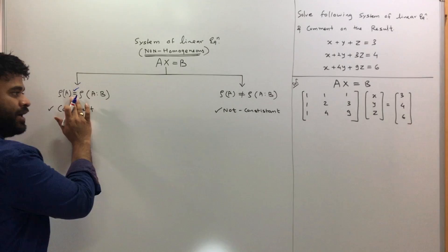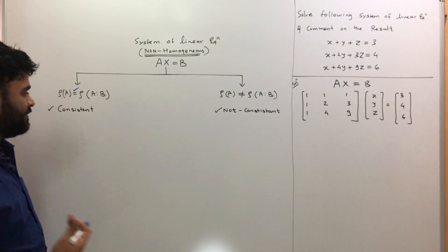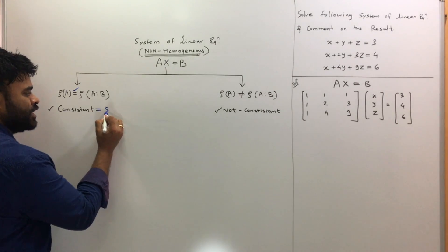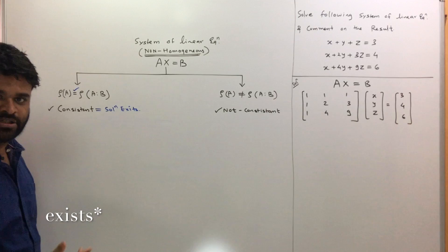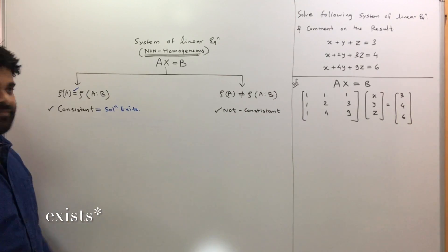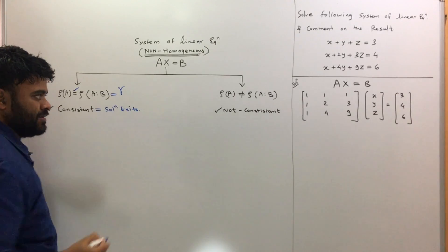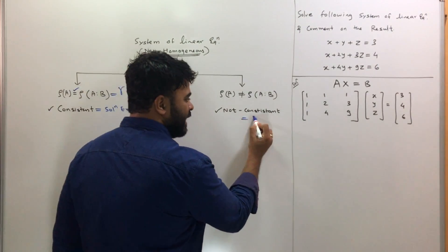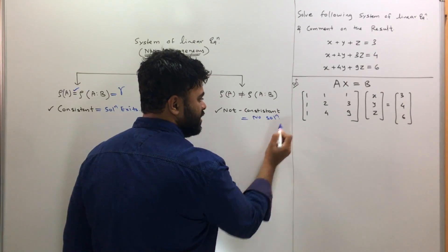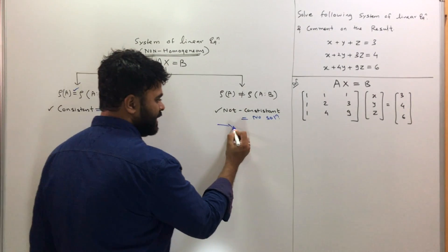If the rank is equal, then we say the equations are consistent, and when I say equations are consistent, it simply means the solution exists. So in this case, the solution exists and you will get some answer. This value we call as R.